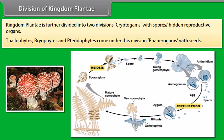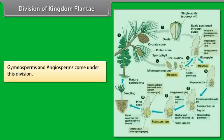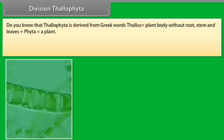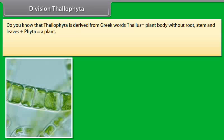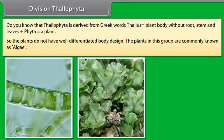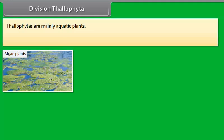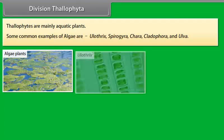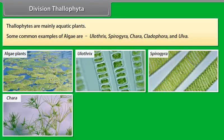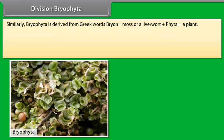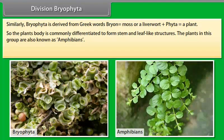Division of Kingdom Plantae. Kingdom Plantae is further divided into divisions at the first level according to whether the plant body has well-differentiated distinct components, and then according to whether the differentiated plant body has special tissues for the transport of water and other substances. It is further divided based on the ability to bear seeds and whether seeds are enclosed within fruits. Kingdom Plantae is divided into two divisions: Cryptogams, with hidden reproductive organs, which includes Thallophytes, Bryophytes and Pteridophytes; and Phanerogams, with seeds, which includes Gymnosperms and Angiosperms.